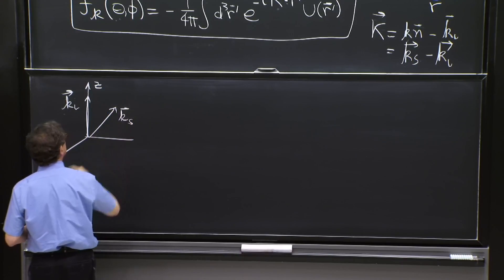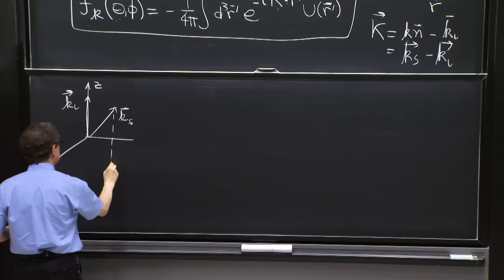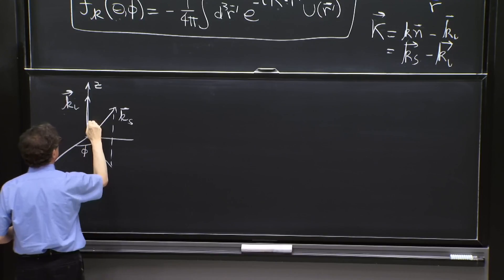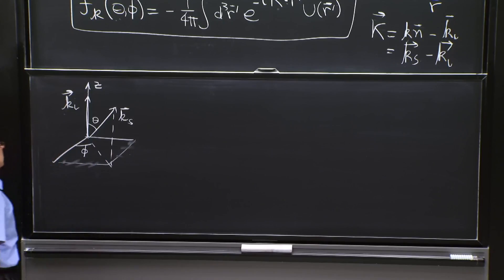And therefore, this vector is the one that has the phi and theta directions. That is that vector.